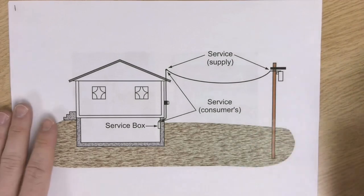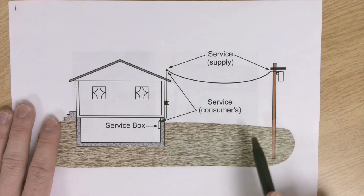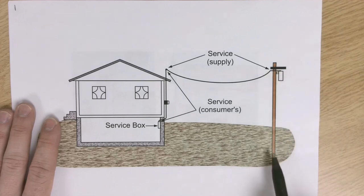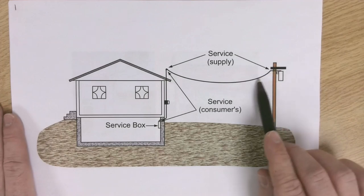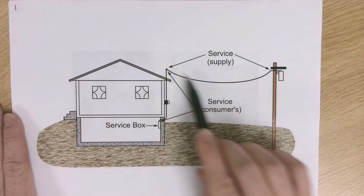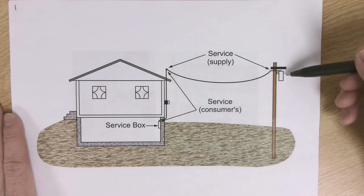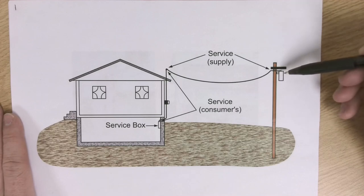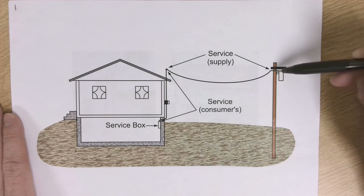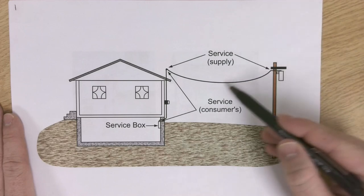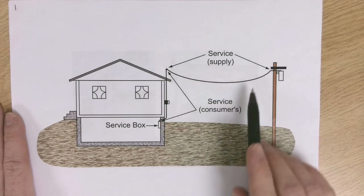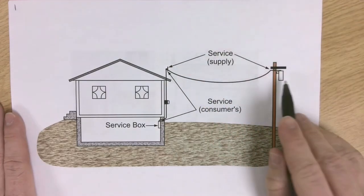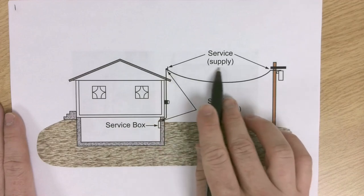Here we have a diagram of an overhead service. If you walk around neighborhoods where you see cables coming from a power pole, and you see that cable running overhead to a house, that's called an overhead service. The point from the high voltage transformer — where they step down the voltage to what we use in houses, usually 120/240 volts — going on these overhead conductors to the house. From the transformer to a splice right here is what's called the supply end of the service.